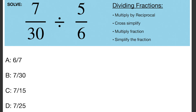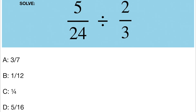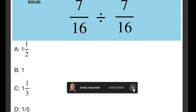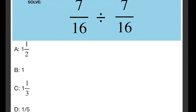7 over 30 divided by 5 over 6. 5 over 24 divided by 2 over 3. 7 over 16 divided by 7 over 6.